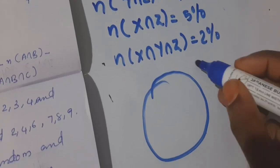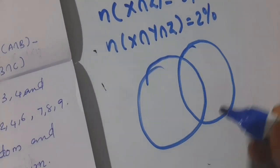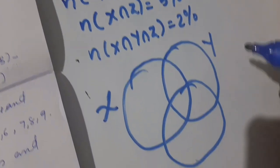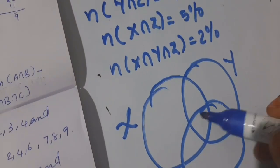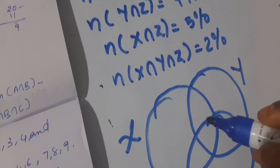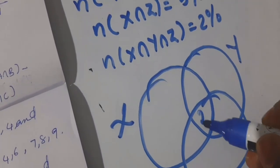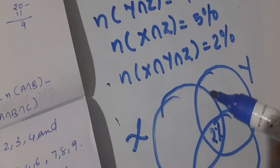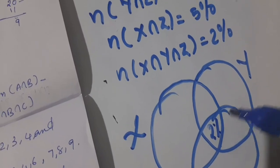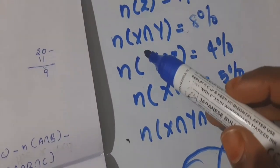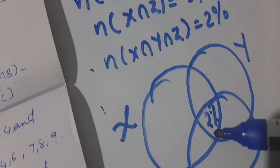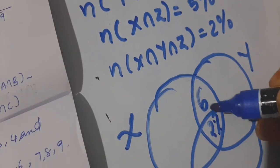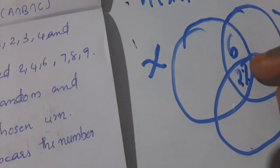We join three circles in a Venn diagram: first circle is X, second is Y, and third is Z. The common portion of all three circles is 2%. The portion common to X and Y only (excluding Z) is 8% − 2% = 6%. So 6 + 2 = 8%.